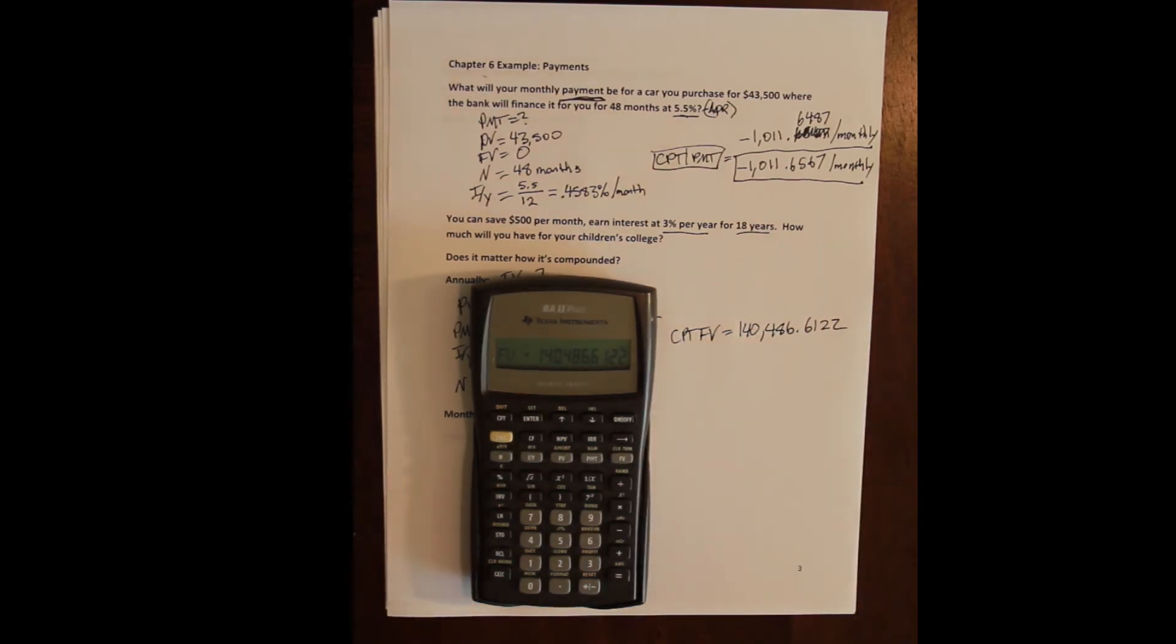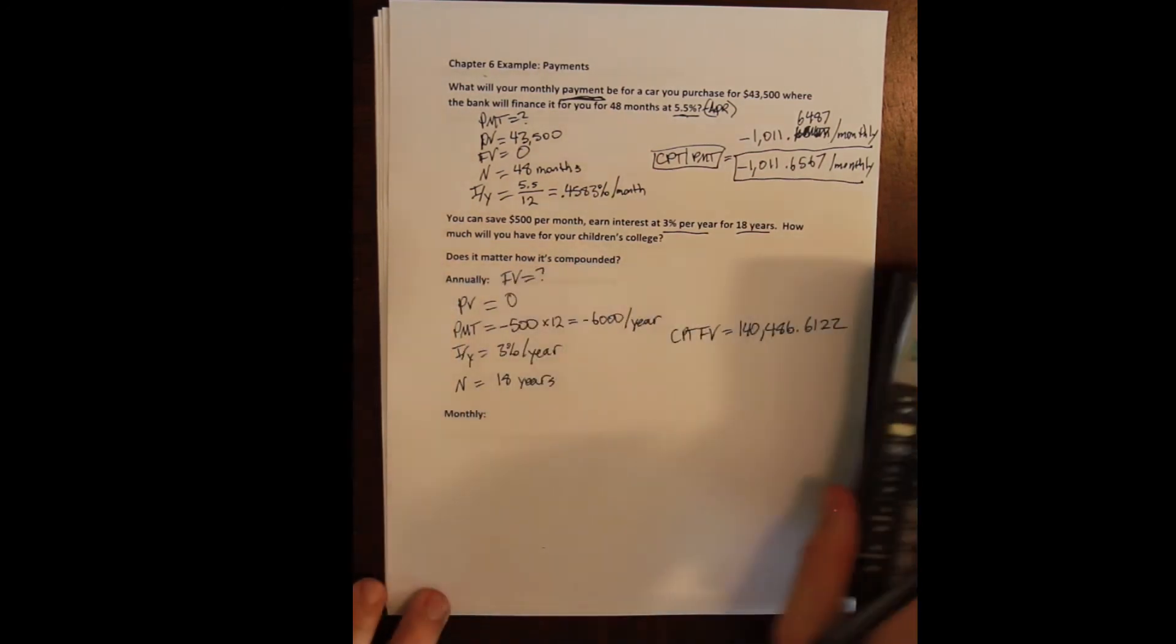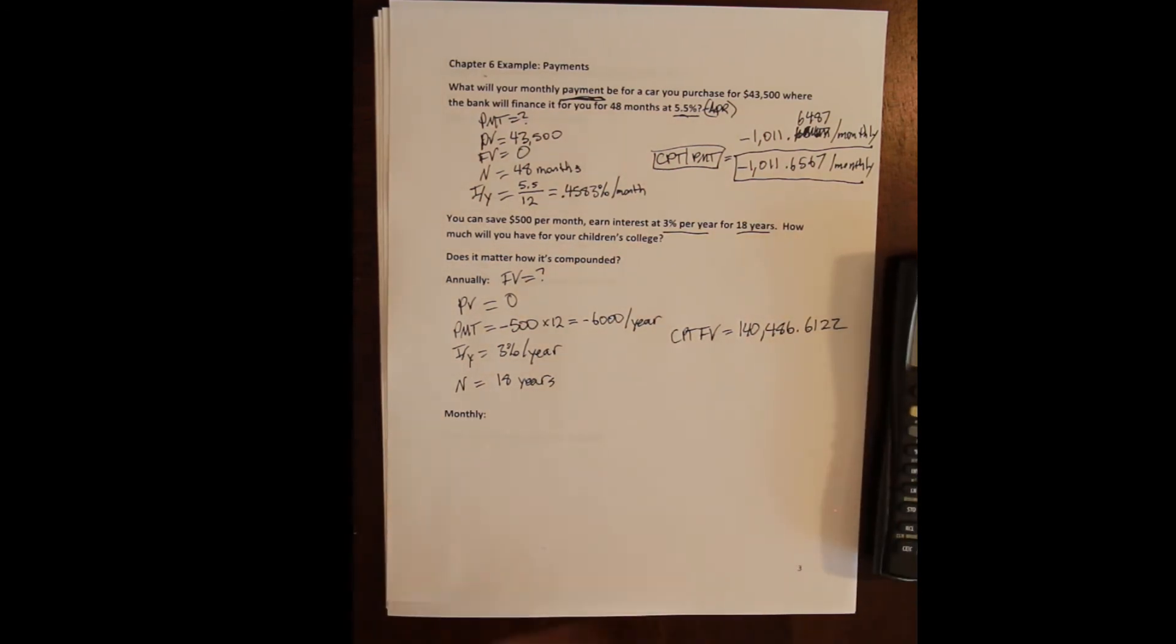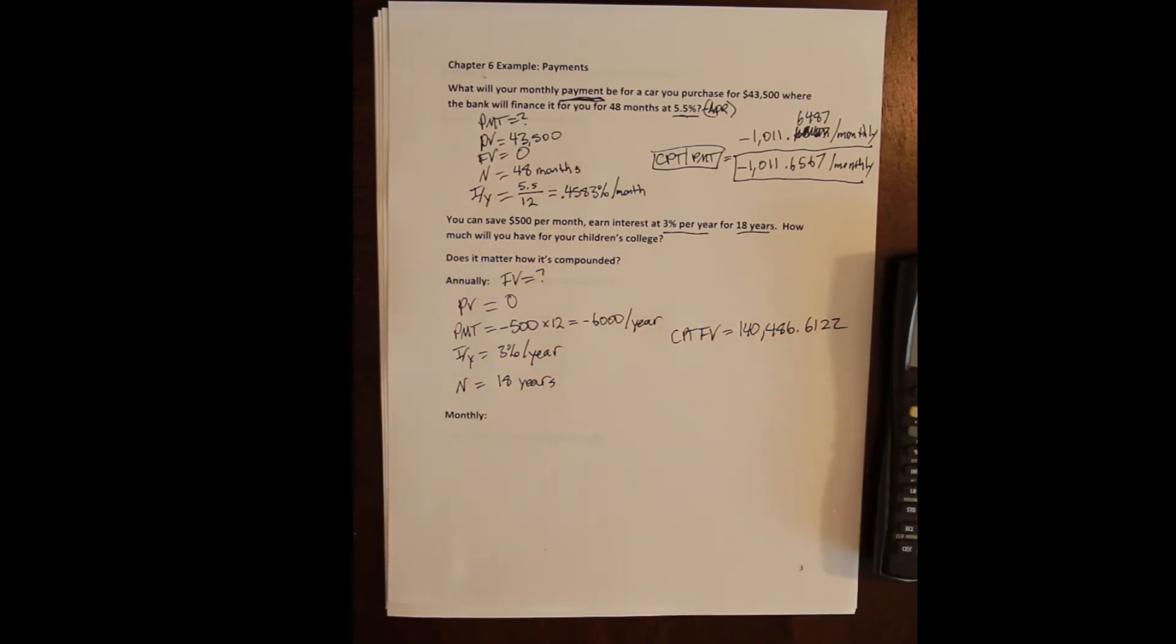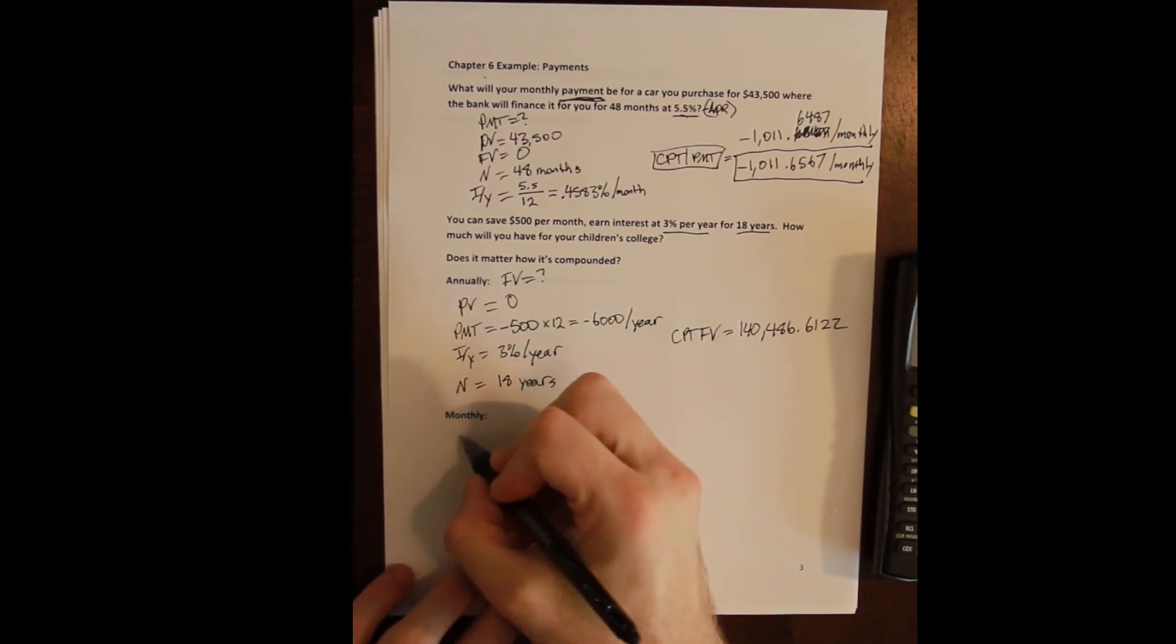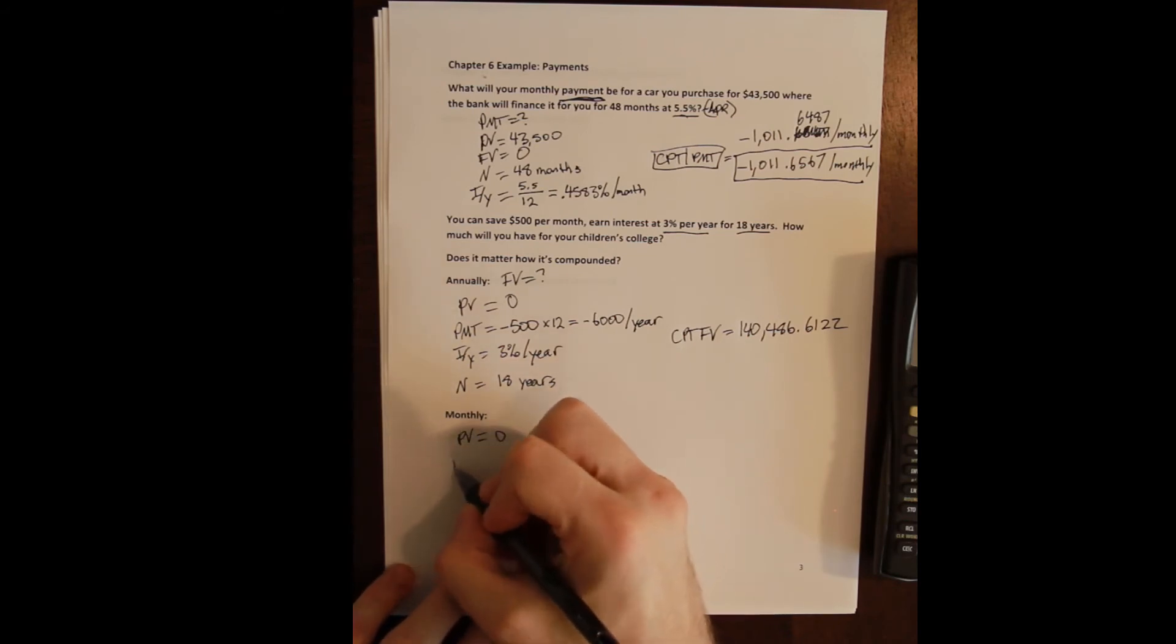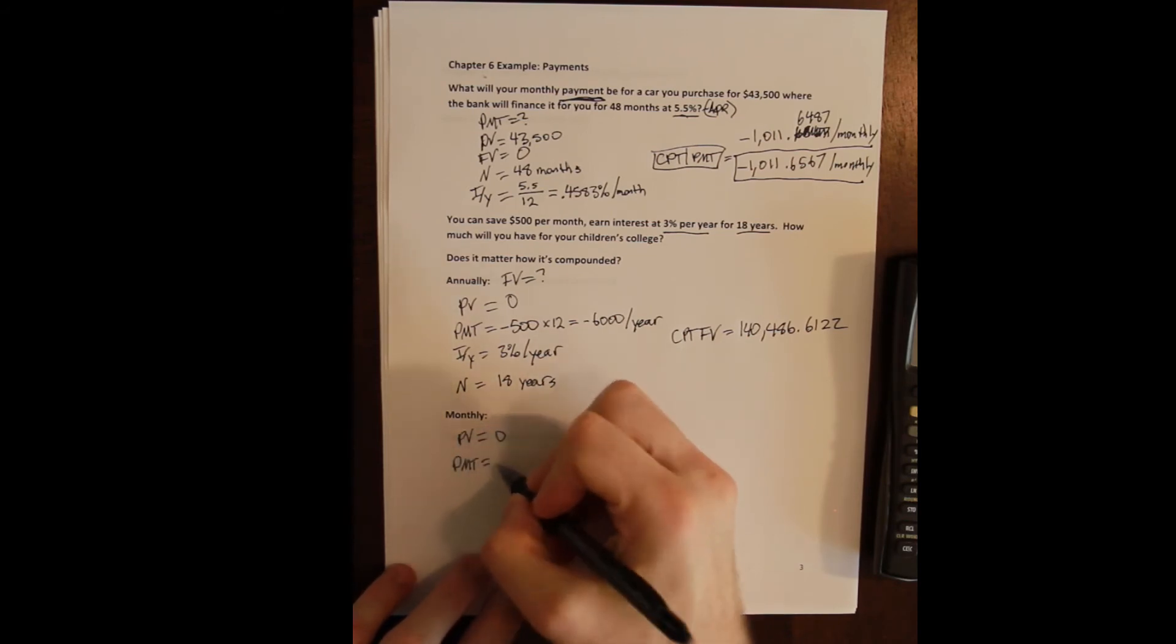I compute my future value and I get a hundred and forty thousand, four hundred and eighty-six dollars and sixty-one point two two cents. Now what happens if we get the monthly compounding for our monthly contribution? Well obviously we're gonna make a little bit more money because we are earning compound interest at a monthly rate instead of an annual rate.